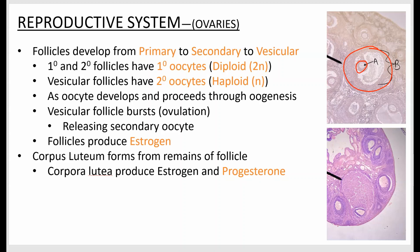When an ovary releases a cell, it doesn't actually release an egg — it releases a precursor called a secondary oocyte. So ovulation technically releases a secondary oocyte, not a mature ovum. It's a common misconception.